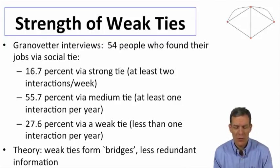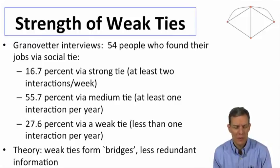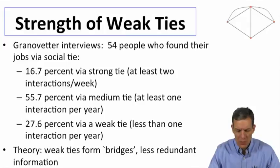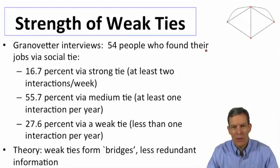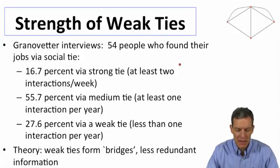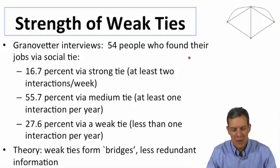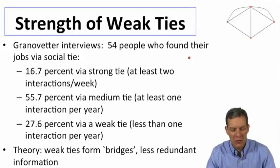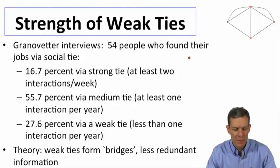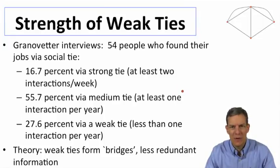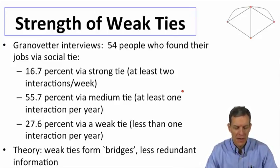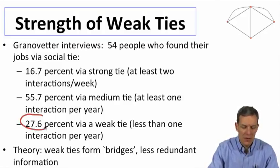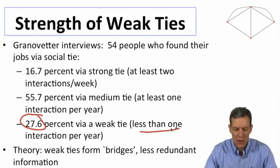What Granovetter did was interview a series of people and ask how they found their jobs. Out of the 54 people he interviewed, one-sixth — a little more than 16% — had found their jobs through strong ties, meaning at least two interactions per week. In contrast, roughly 56% found their job through a contact with whom they had a medium tie — at least one interaction per year but not two per week. Weak ties, meaning less than one interaction per year, still accounted for 27.6% of job contacts.